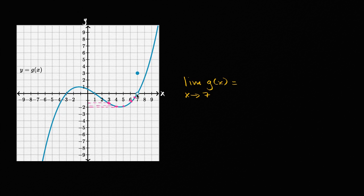g of 6.9 is right over there. It looks like it's a little bit less than zero. g of 6.999 looks like it's still less than zero, but it's a little bit closer to zero. So it looks like we're getting closer. As x gets closer and closer, but not quite at seven, it looks like the value of our function is approaching zero.